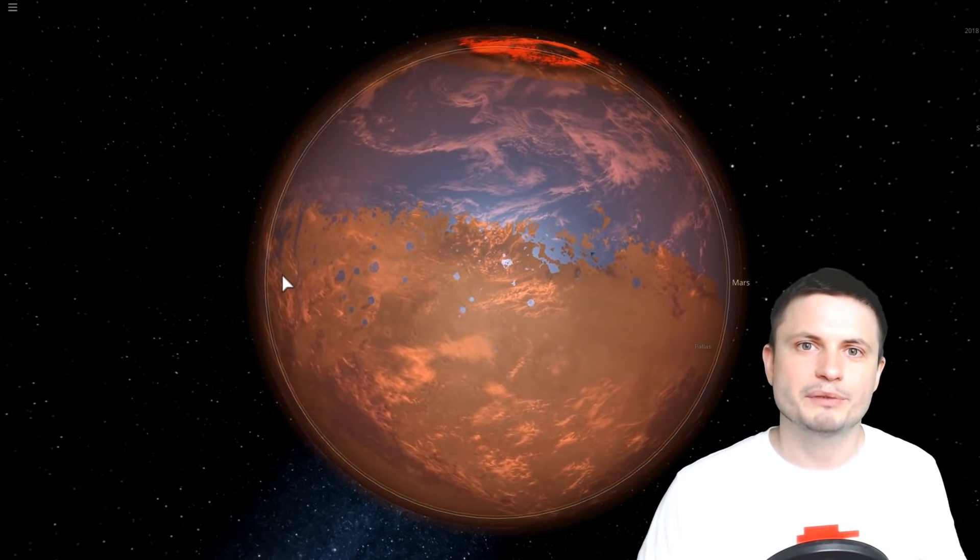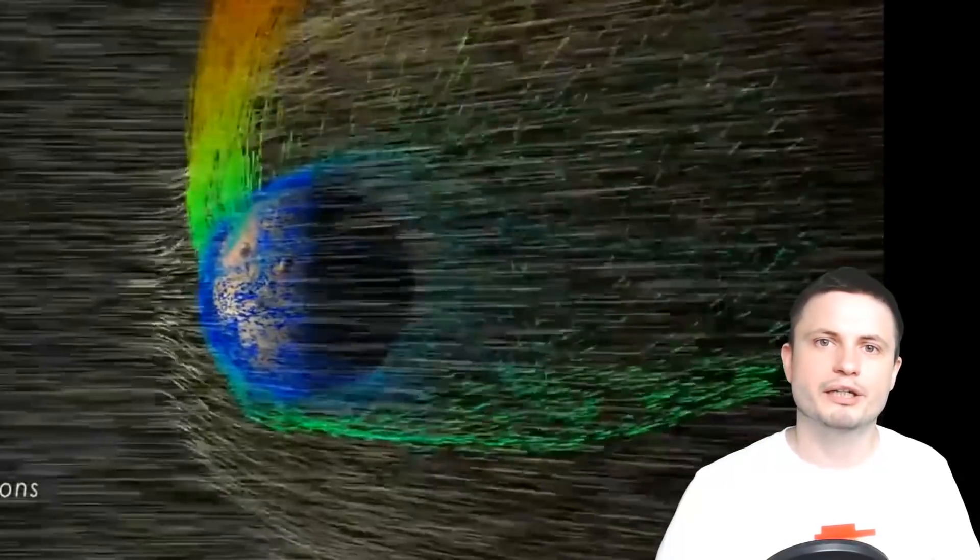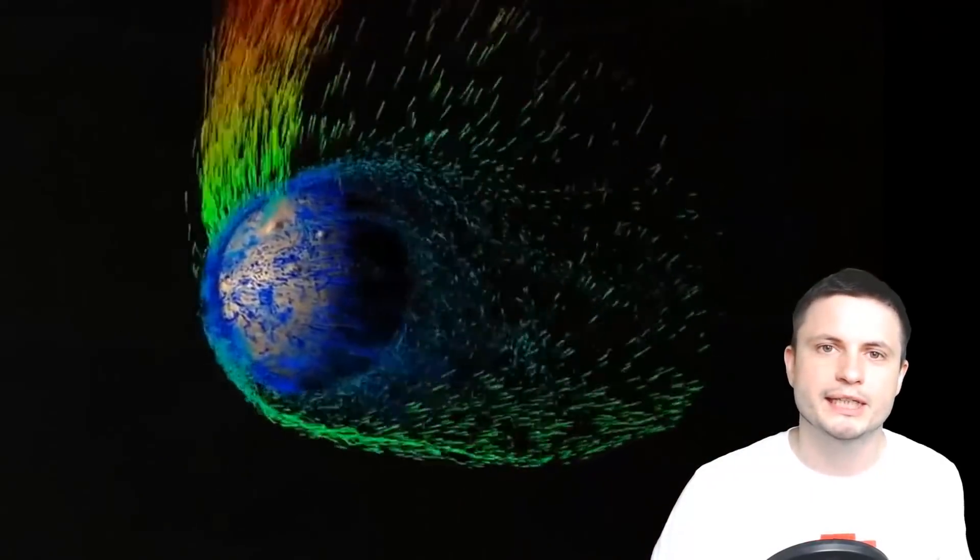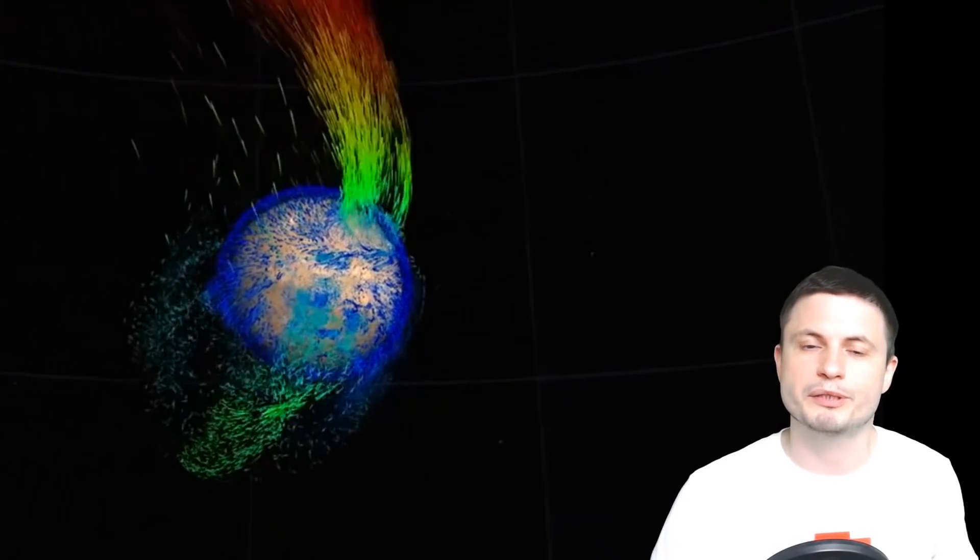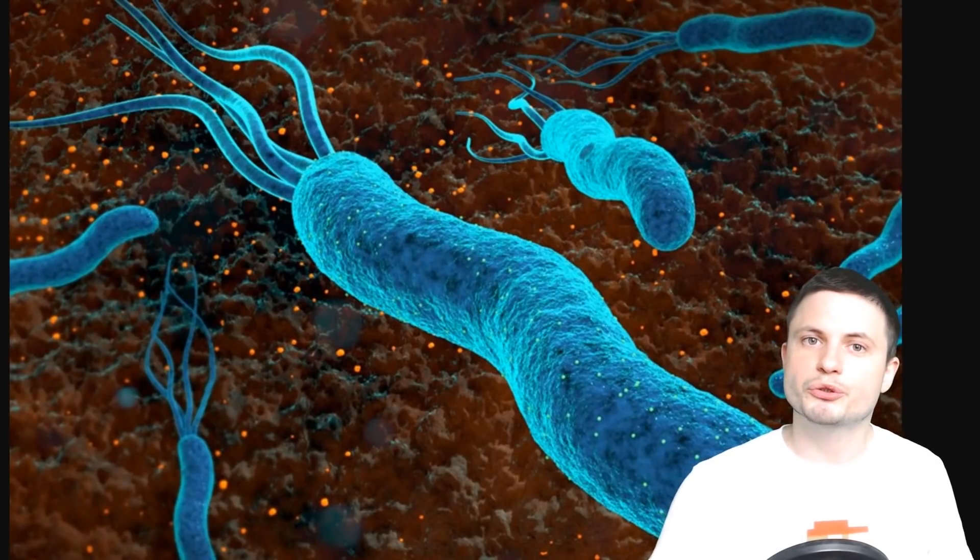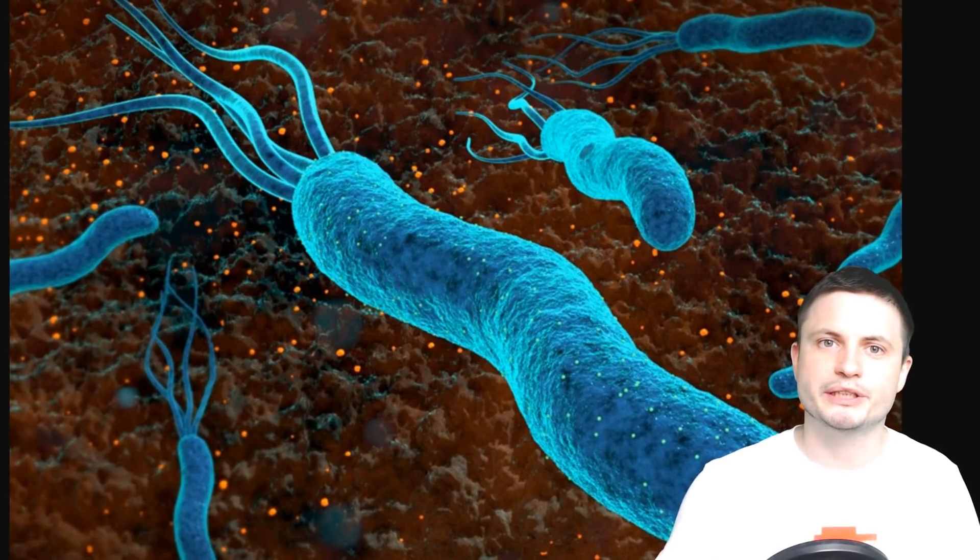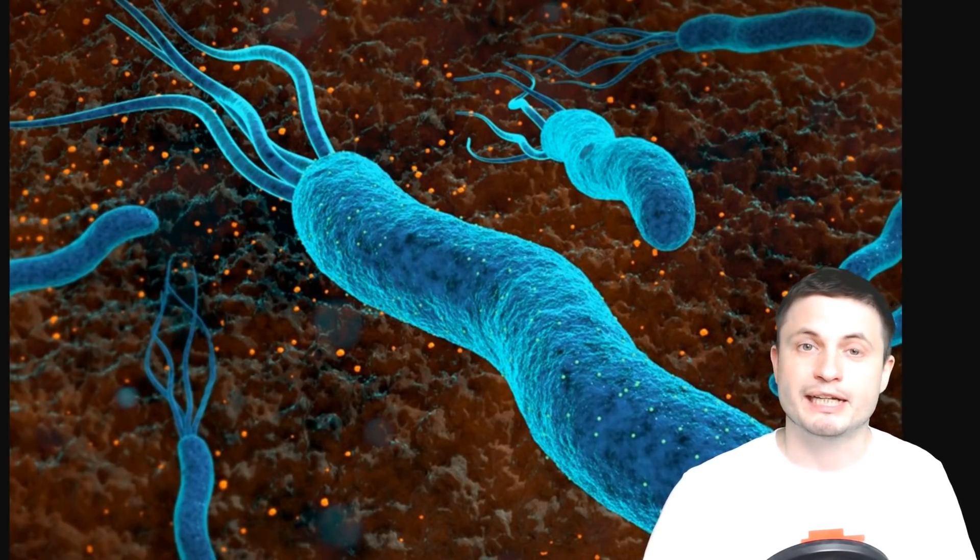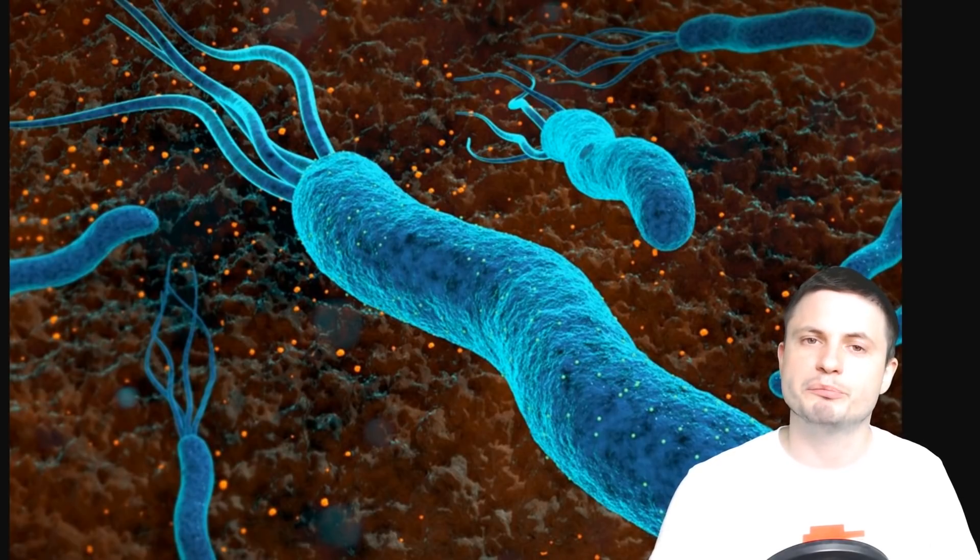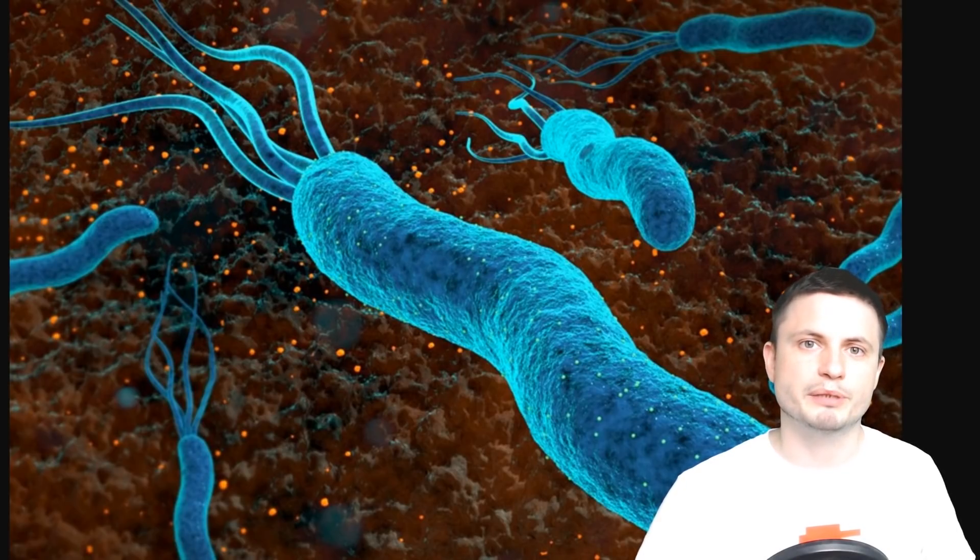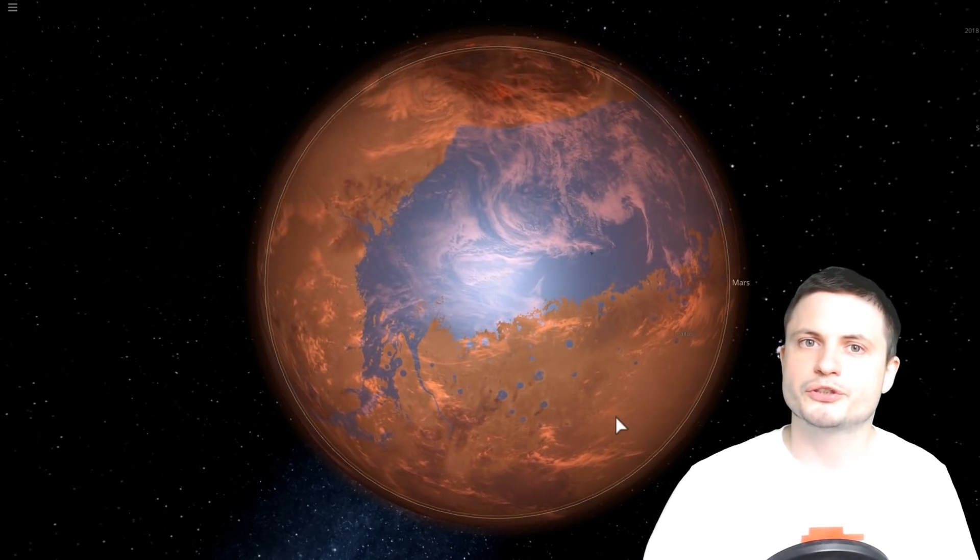By the time that Mars basically got bombarded by the solar particles and lost all of its atmosphere and all of its water, by then it may have already established some sort of primitive life, because it actually took much less than 700 million years to establish first life here on Earth. As a matter of fact, following the late heavy bombardment, life established really quickly within about 100 million years, and 700 million years would be enough for these really early bacteria to even start evolving into something more complex.